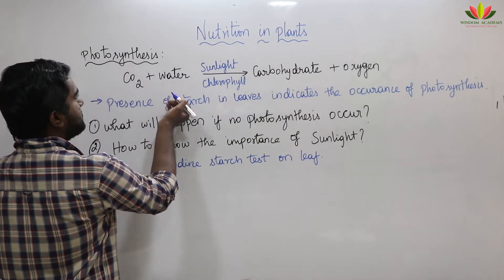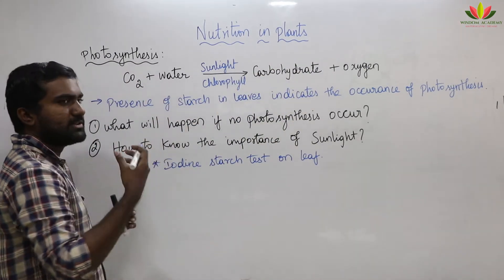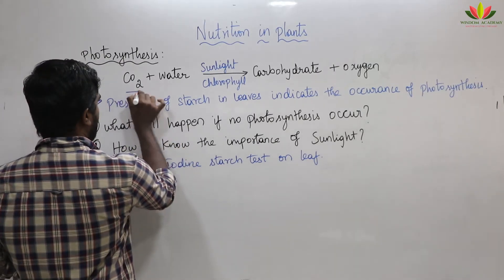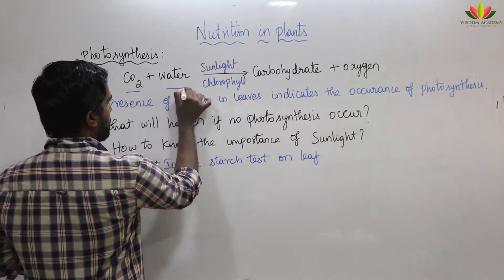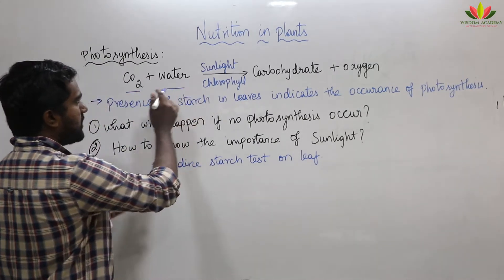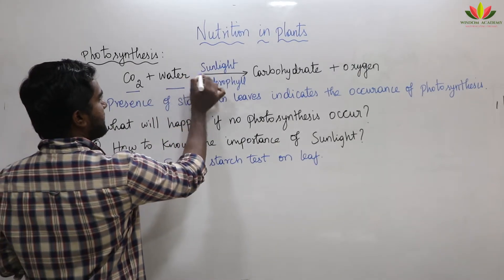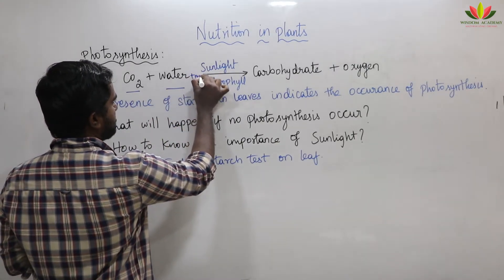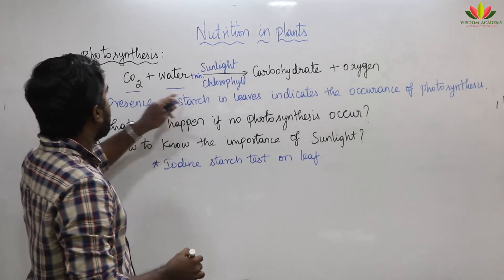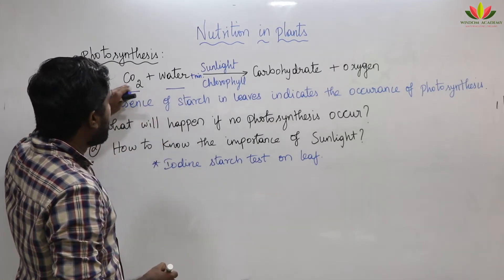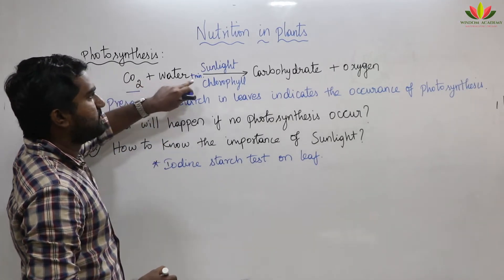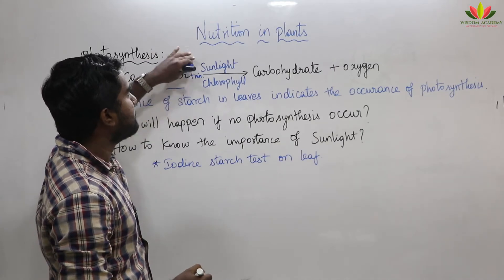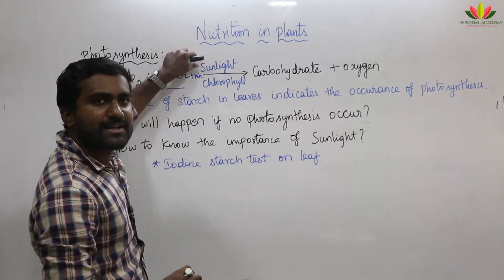What are the raw materials — the reactants — needed for photosynthesis? Carbon dioxide and water, plus minerals. When CO2, water, and minerals react together in the presence of sunlight and chlorophyll, a reaction takes place.